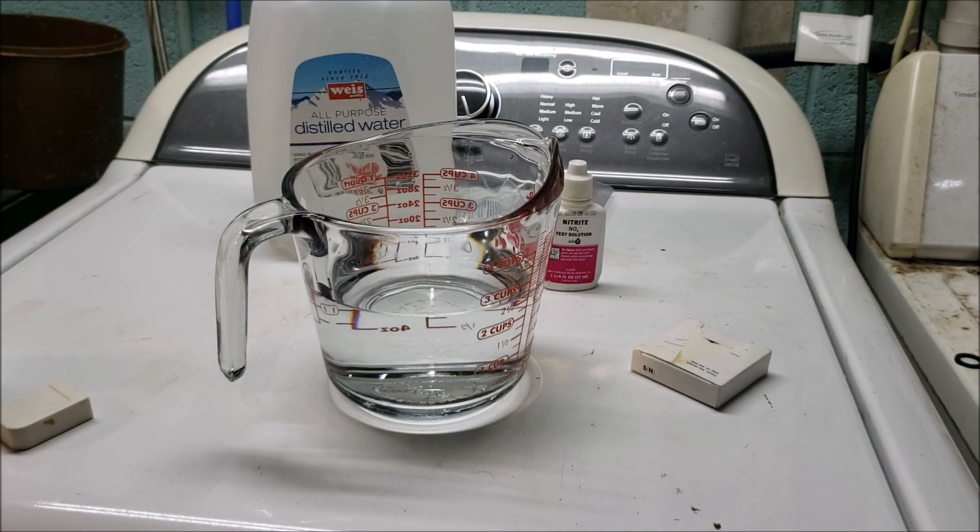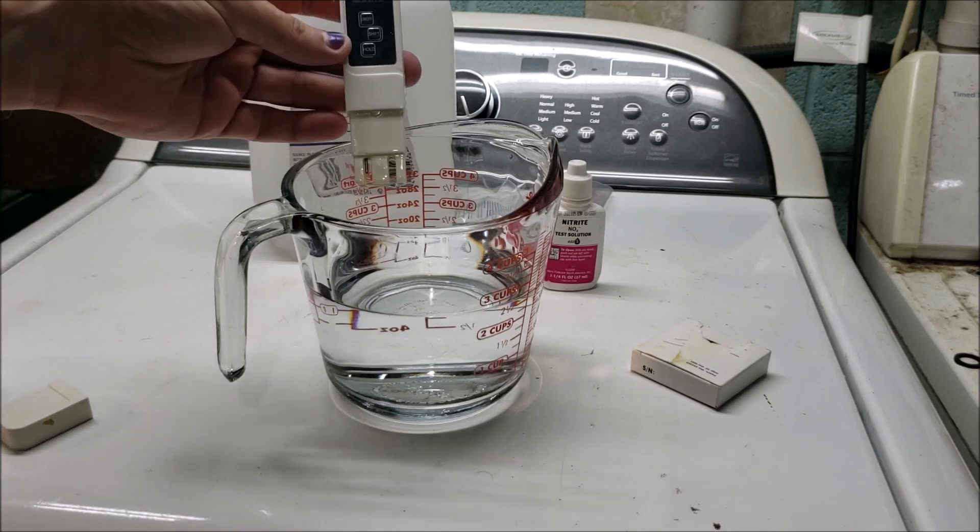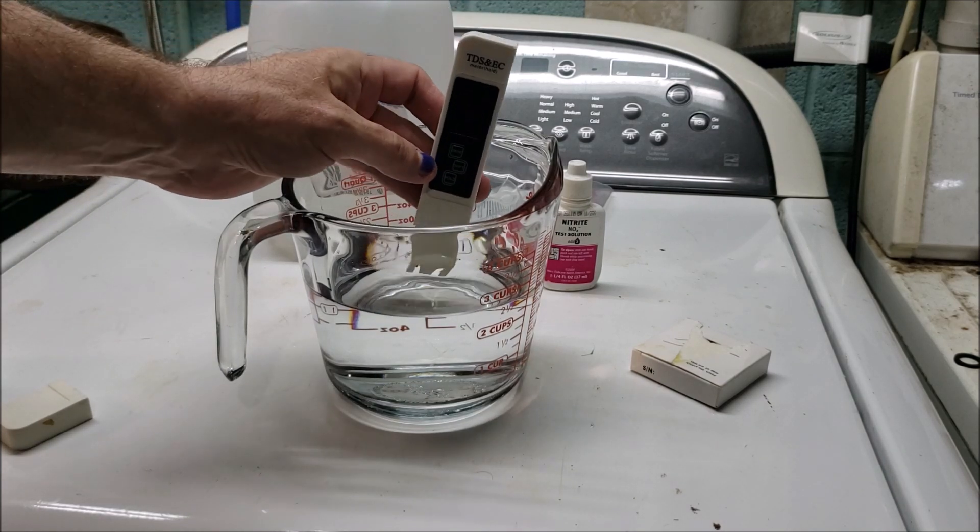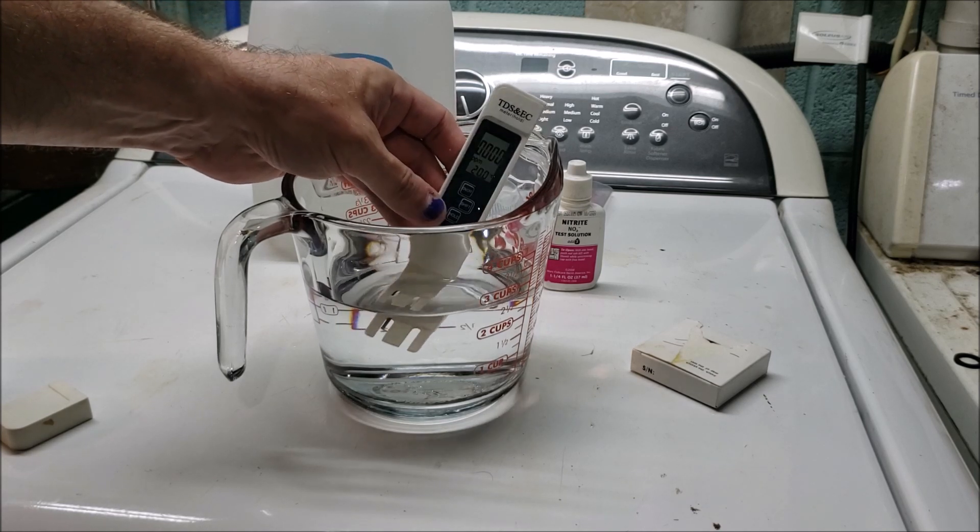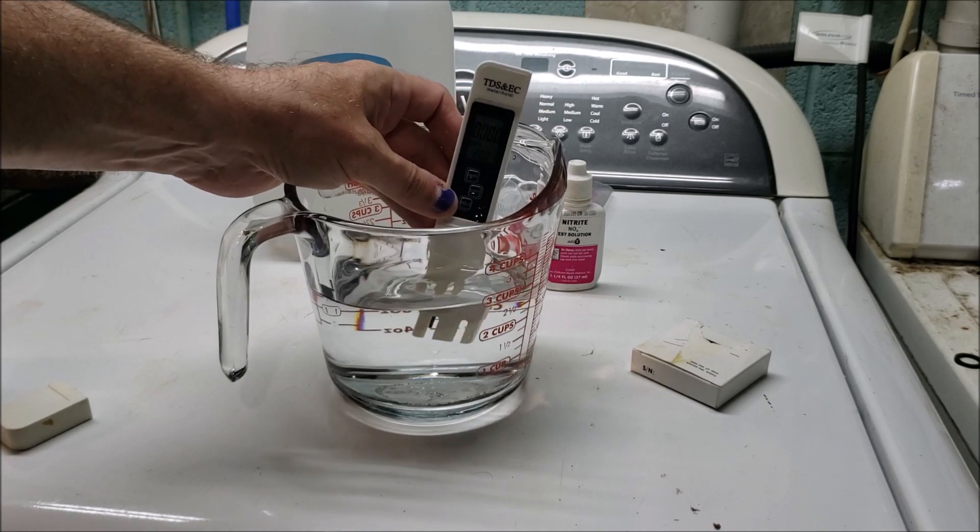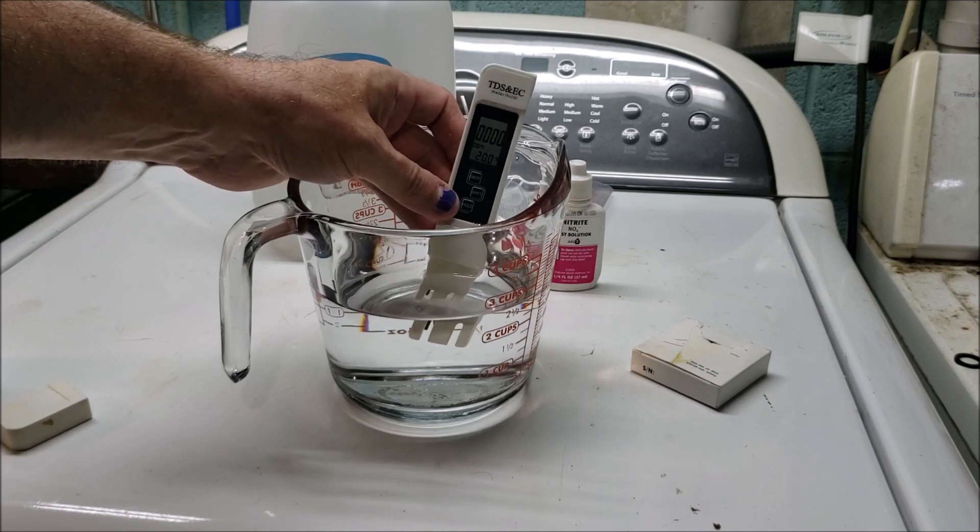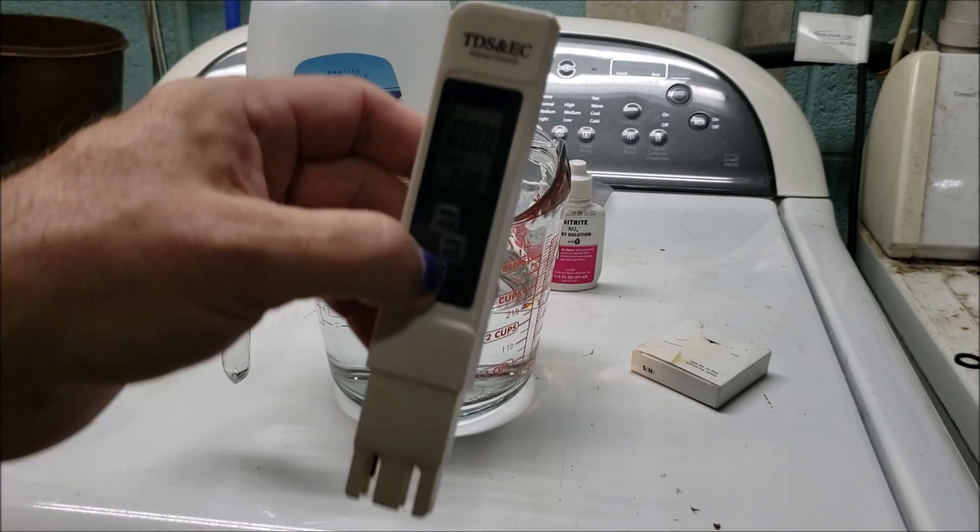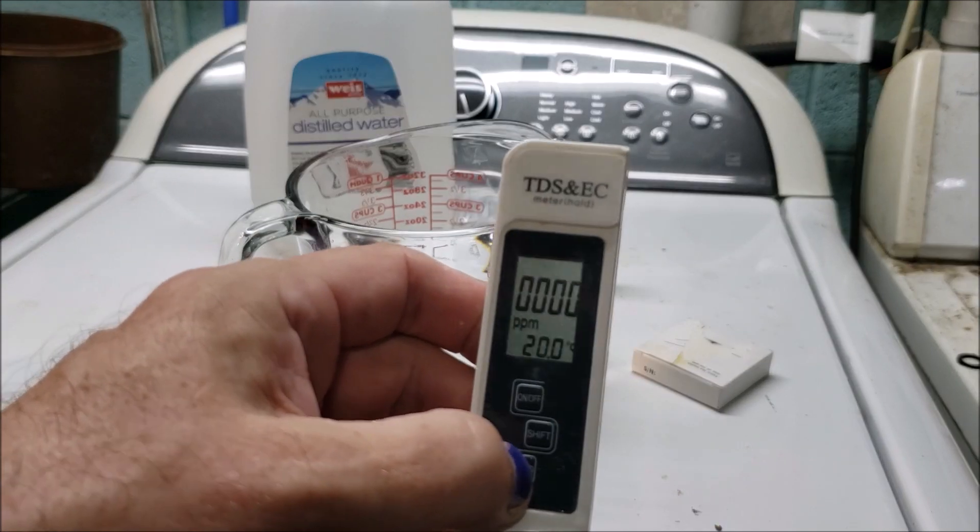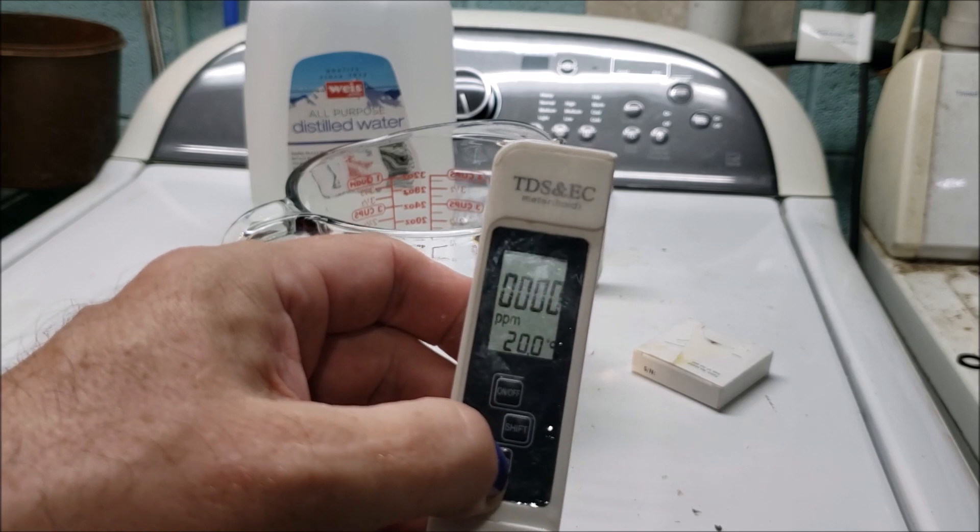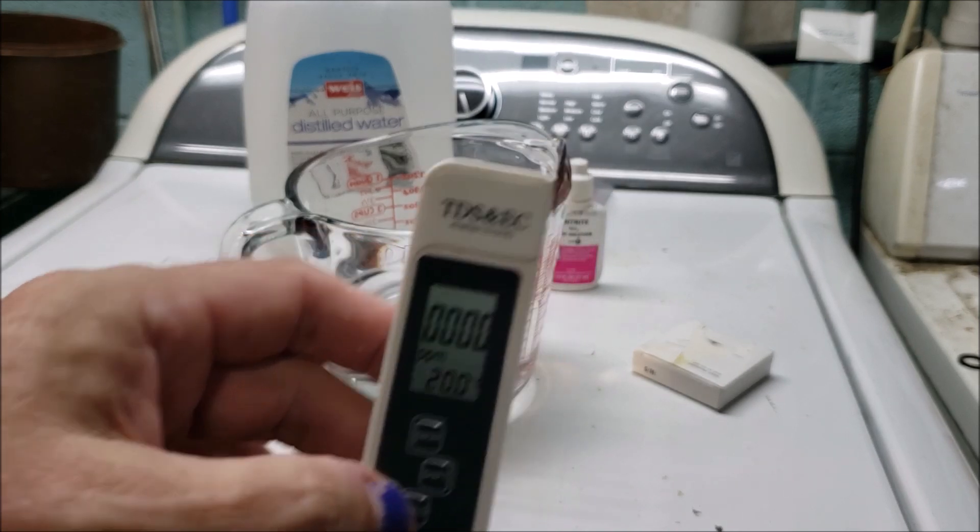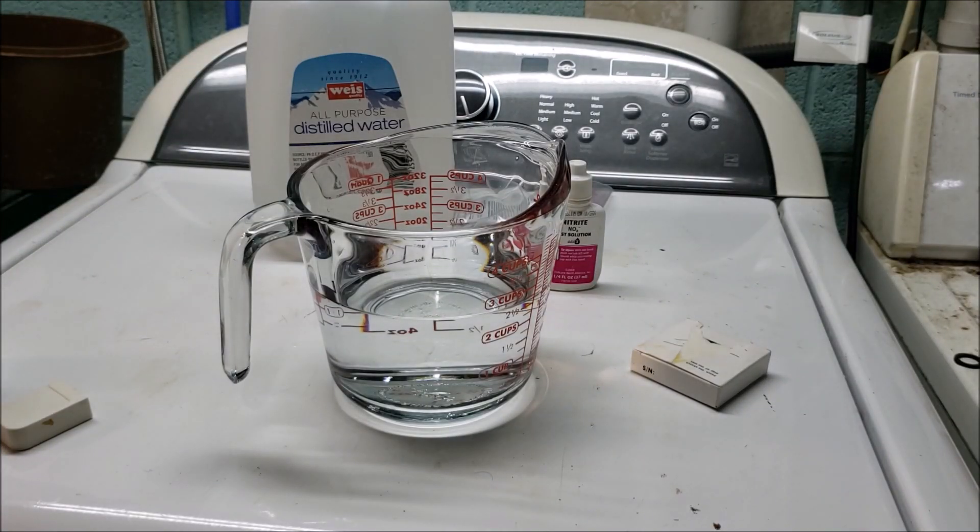Alright everybody, this is distilled water and this is my TDS meter. Give it a few moments to get an accurate reading. Zero parts per million total dissolved solids. We don't need to do a water hardness test on this because there's obviously nothing in it—it has to be zero degrees hardness.